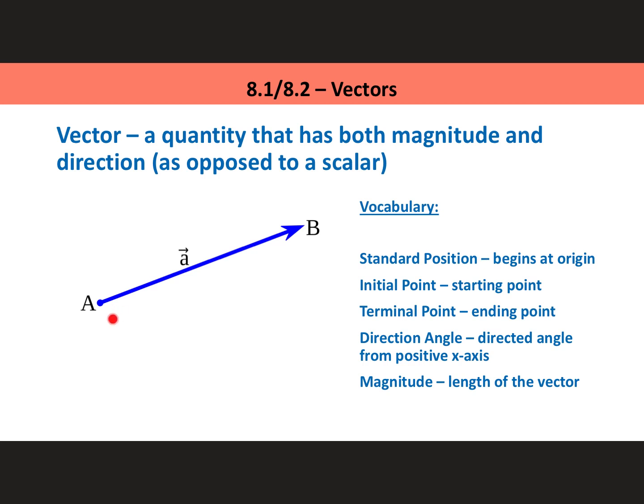Like our initial side when we were learning about angles of rotation, that can rotate clockwise around the origin. This is the same idea. Point A here is the beginning, and point B here is the end. A standard position vector begins at the origin.